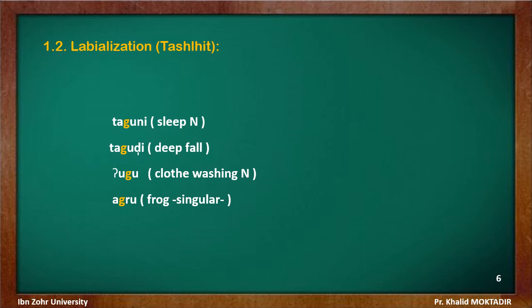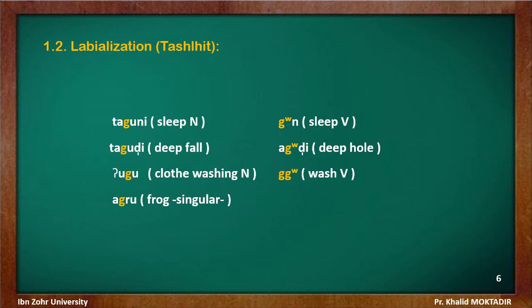Here we have the velar voiced stop G followed by a rounded vowel in the words taguni, tagudi, ugu, and aguru. Notice what happens in morphologically related forms where the G assimilates the rounding of the vowel and becomes a labialized consonant: gul, agudhi, and igura.